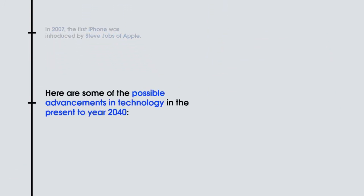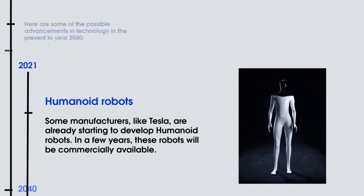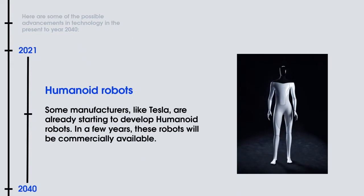Here are some of the possible advancements in technology in the present to the year 2040. Humanoid Robots — some manufacturers, like Tesla, are already starting to develop humanoid robots.